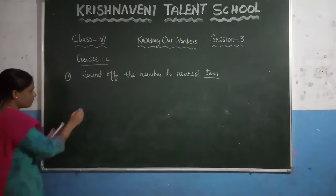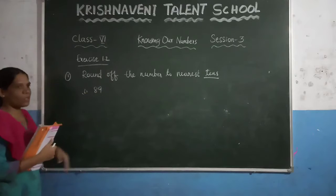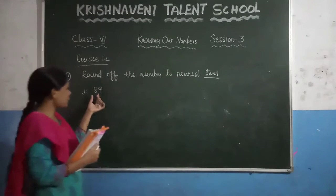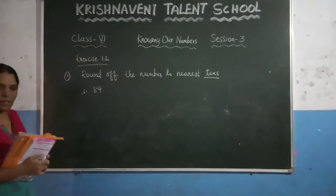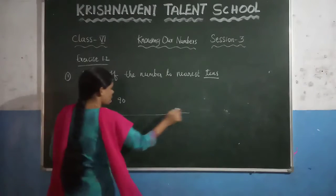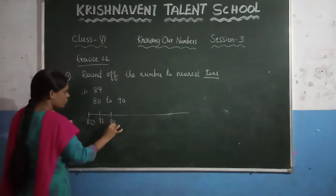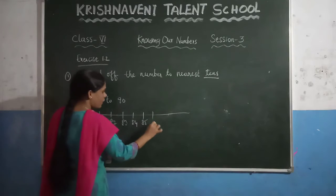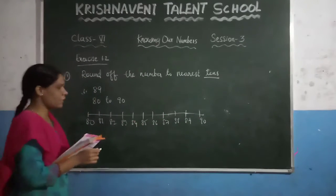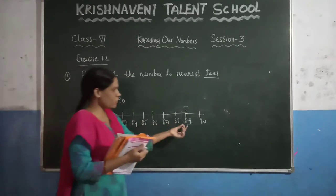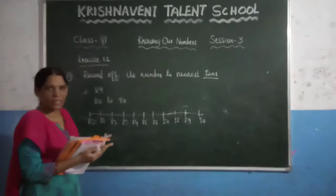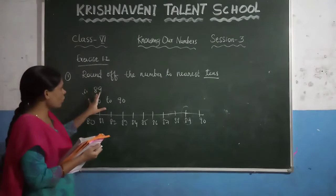First question: they have given the number 89. Now you have to check which tens 89 lies between. Since they ask the nearest tens, you have to check this number lies between which numbers. You know that 89 lies in between 80 to 90. Let us draw the numbers: 80, 81, 82, 83, 84, 85, 86, 87, 88, 89, 90. Here they have given the number 89. You can observe that 89 is very near to 90 — after 89 you get 90. If you see 80, it is far; in between 8 numbers are there. So we can say the nearest number of 89 is 90.